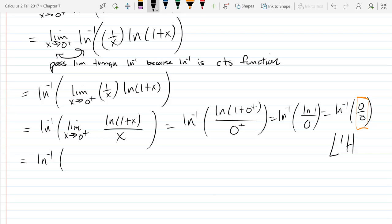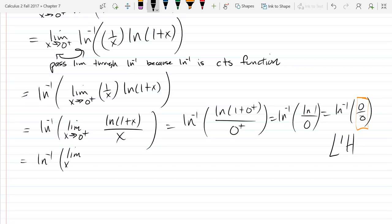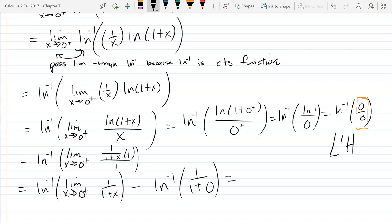So L'Hopital's rule tells me that this is equal to the limit as x approaches 0 on the positive side. Derivative of this natural log is 1 over that stuff multiplied by derivative 1 plus x, which is just 1. So there's really no significant chain rule happening up there, and derivative of x is just 1. Simplify this down. So our fraction is now just 1 over 1 plus x, and we should have no problem plugging in our limit value now. And ln inverse 1, that's e to the first power, which is just e.